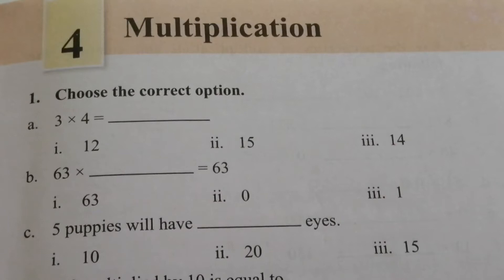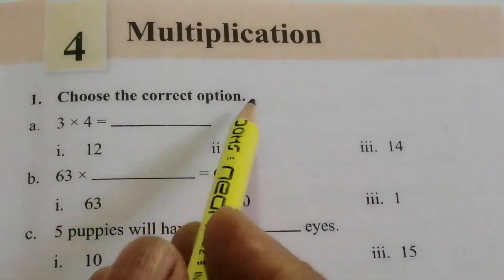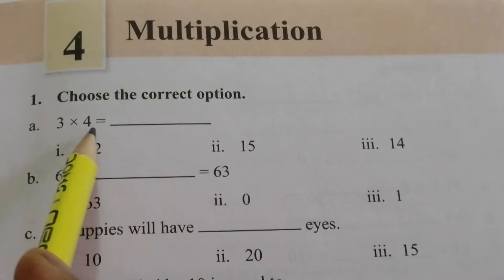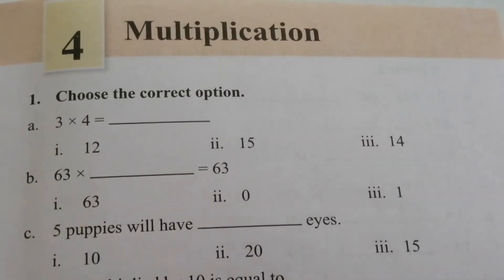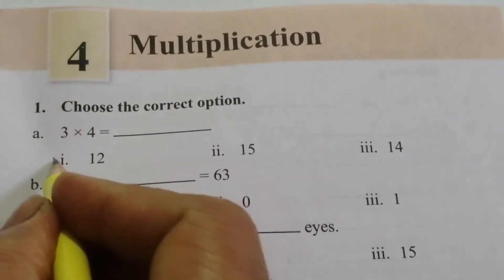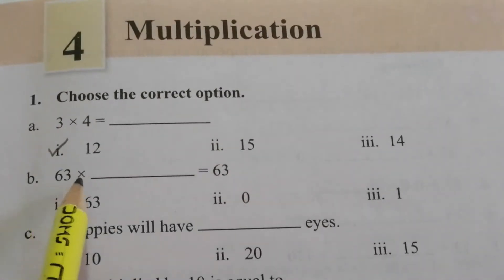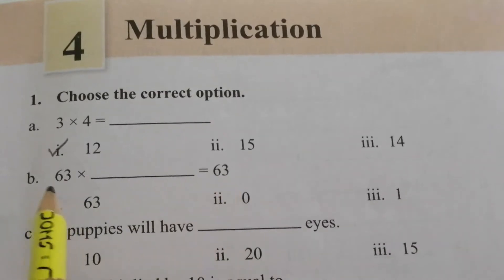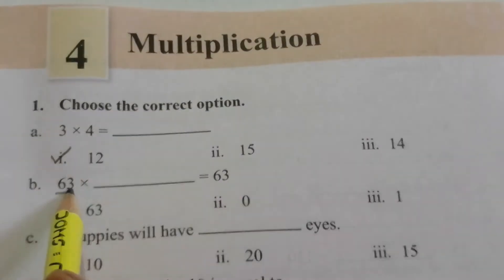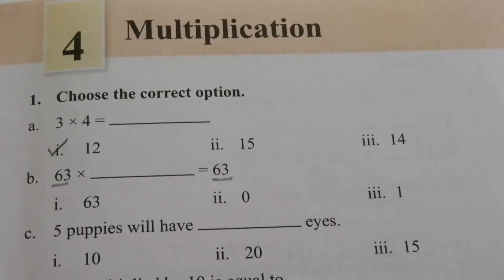The first problem is: choose the correct option. Part a: 3 cross 4 — 3 fours are 12, so the answer is 12. Part b: 63 into dash equals 63. We have to multiply the given number with 1, so the answer is 1.